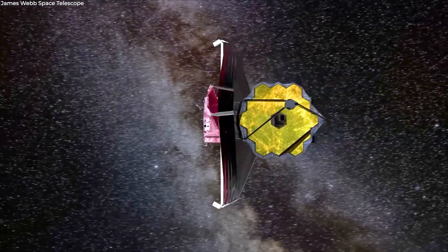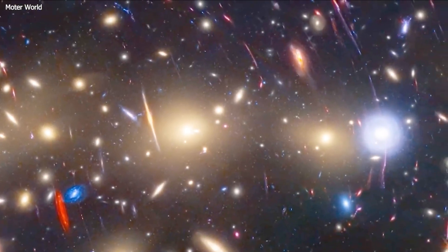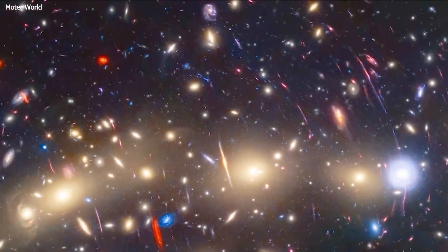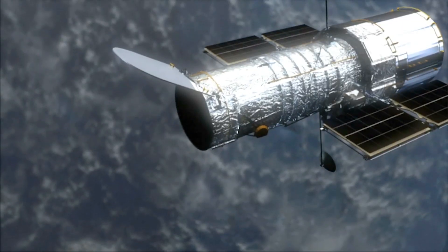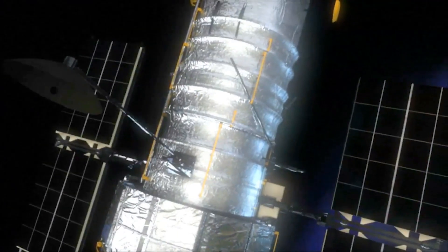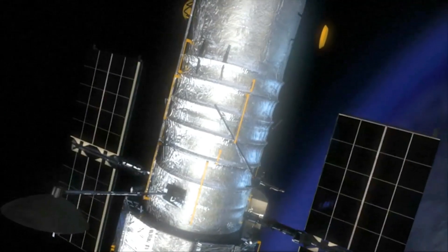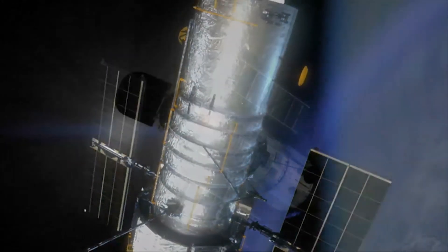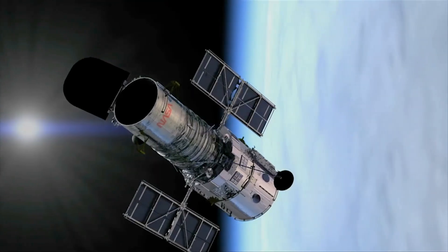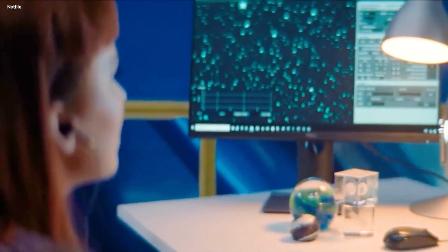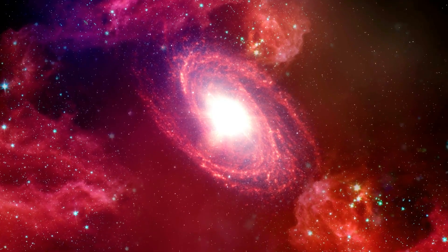Before James Webb Space Telescope, astronomers sometimes referred to them as Hubble Dark Galaxies, in reference to the previously most sensitive space telescope. Until now, Hubble's optical perspective has been the only method by which scientists have been able to observe galaxies in the early universe.